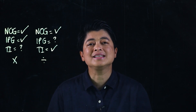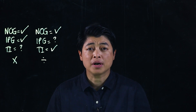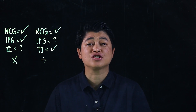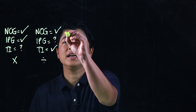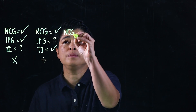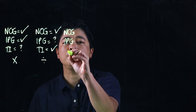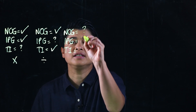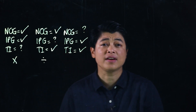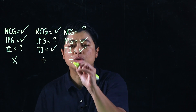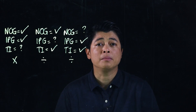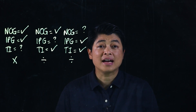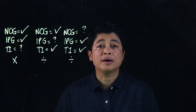This is a similar thought process to the bar models of the last chapter. Number of groups, items per group, and total items — if number of groups is your question mark and the others are given, that too is a division problem.